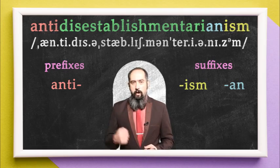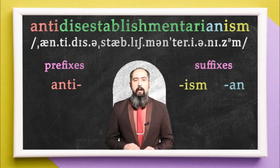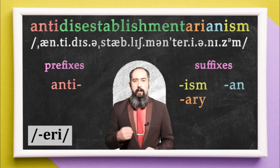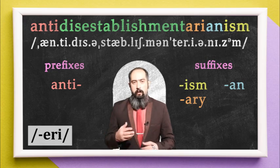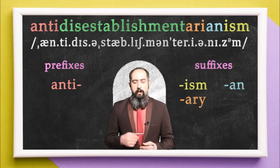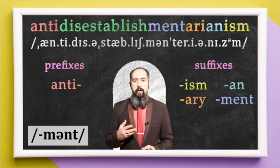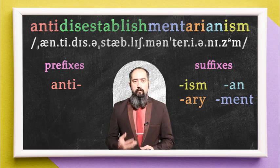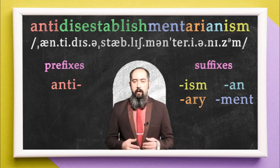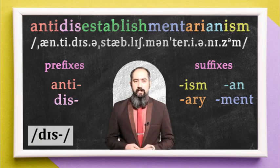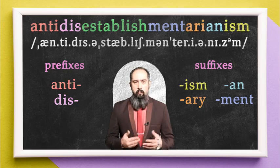Again, another suffix: -ary (A-R-Y). For sure, in this word it is spelled a little bit differently. It's a noun maker. Before that, we've got -ment (M-E-N-T), another noun maker. And let's take a look at another prefix: dis-, which means 'not' or 'in a wrong way.'